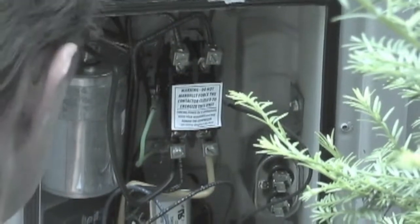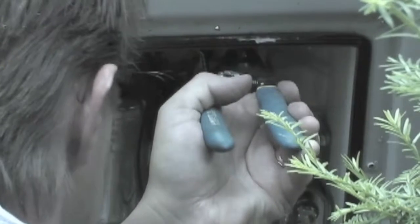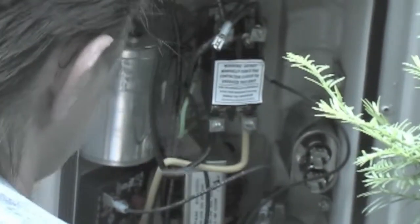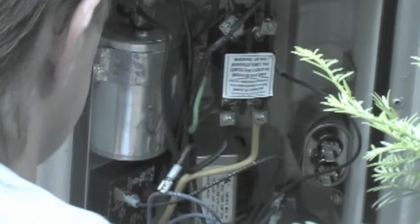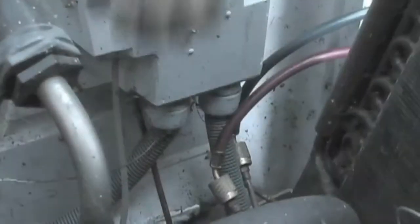Next, we are removing the compressor's wires. There are two heater wires at the top of the contactor on this model. Then you also remove the compressor wires from the bottom two lugs, black and yellow in this model. There is also a red wire connected to the run capacitor that you will be removing as well.